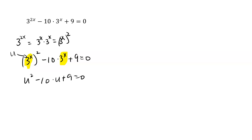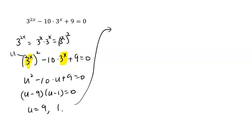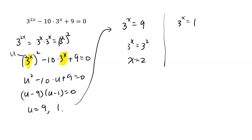Now 9 times 1 is 9, and 9 plus 1 is 10. So this factors as u minus 9 times u minus 1 equals 0. The solutions are u equals 9 and u equals 1. But again, you need to figure out the value of x. So u equals 9 turns into 3 to the x equals 9, and u equals 1 turns into 3 to the x equals 1. Well, 9 is 3 squared, so x must be 2. And anything to the 0th power is 1, so x must be 0. Those are the two answers.